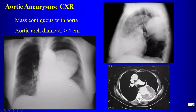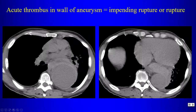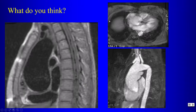On chest radiograph, a mass that you cannot separate from the aorta is an easy diagnosis with CT. Aneurysms can have thrombus within the wall. If we see hematoma outside of the aneurysm, we know there has been rupture. On non-contrast imaging, acute thrombus within the wall — seen as a crescent of increased attenuation — can also be an indication of impending rupture. In this patient there is also hematoma in the mediastinum, indicating rupture.